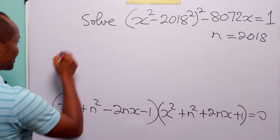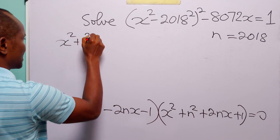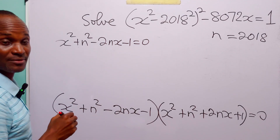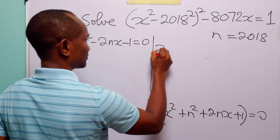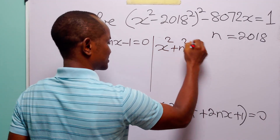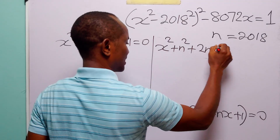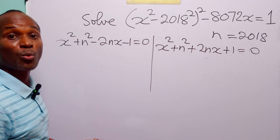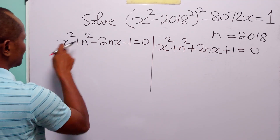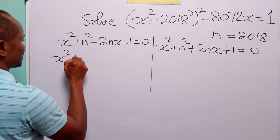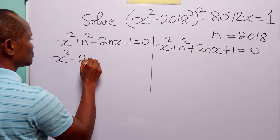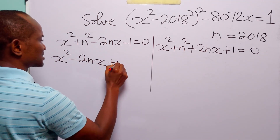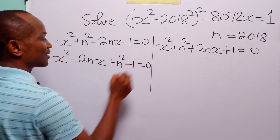From here we have that either x² + n² − 2nx − 1 = 0, or the second factor equals zero. Let me rearrange the first equation: x² − 2nx + (n² − 1) = 0, where n is the constant 2018.